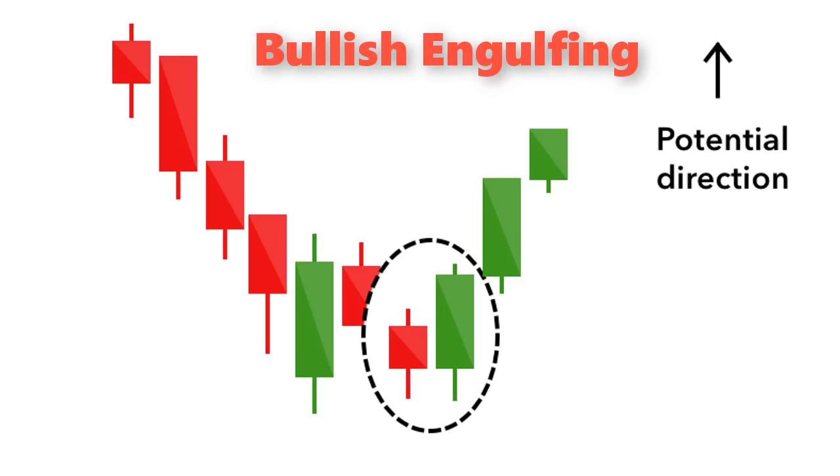Bearish Engulfing. A bearish engulfing pattern occurs at the end of an uptrend. The first candle has a small green body that is engulfed by a subsequent long red candle. It signifies a peak or slowdown of price movement and is a sign of an impending market downturn. The lower the second candle goes, the more significant the trend is likely to be.